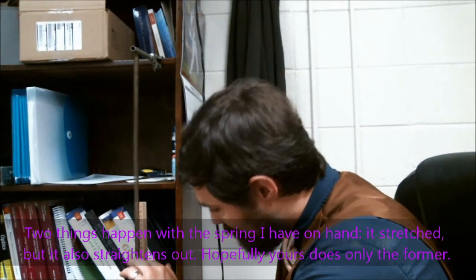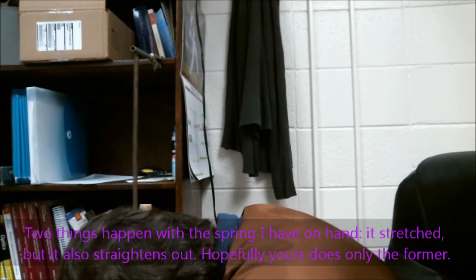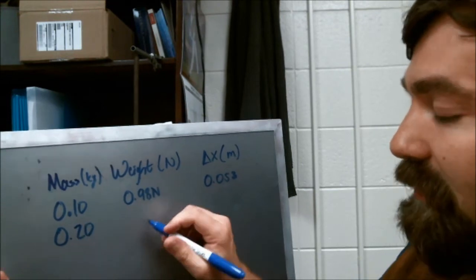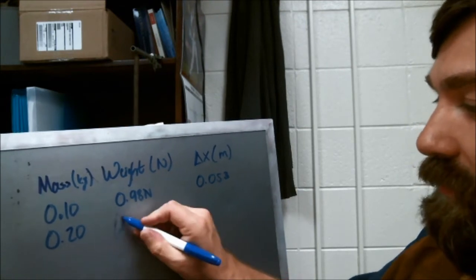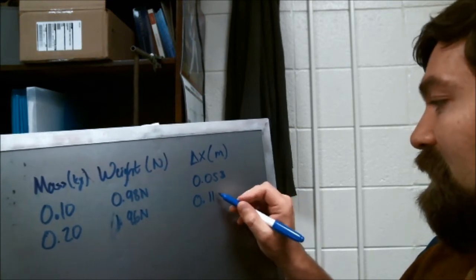Second data point: I pick another mass, this is 100 grams. I attach to the spring, let it stretch a little more, and measure where the bottom of the spring is again. Here it appears to be about 11.4. So now we're at 200 grams, 0.20 kilograms. This is 1.96 newtons, 0.114 meters.